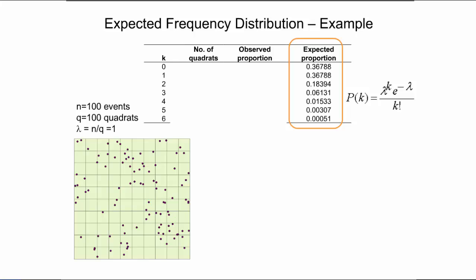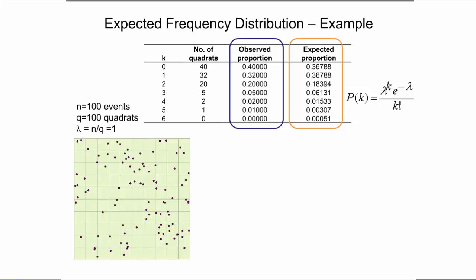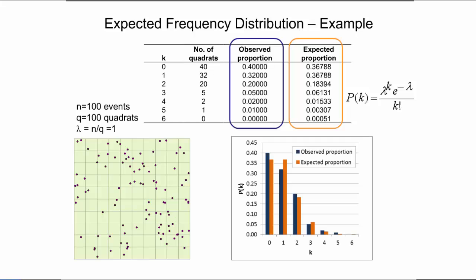Next, we can use an observed point pattern and compute an observed quadrat count distribution. For example, counting how many of the 100 quadrats have 0 events gives 40 in this case, so the observed proportion for k equal to 0 equals 40%. This step is repeated for all remaining k values. One can then compare the observed distribution of quadrat counts to that predicted by the Poisson distribution. The bar chart plots the relative frequencies of the two distributions next to each other. The observed proportions are similar to those expected from an independent random process, and as a next step, a statistical test could be applied to determine if this is a likely realization.